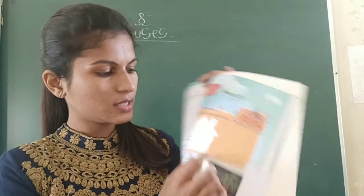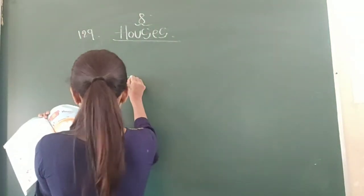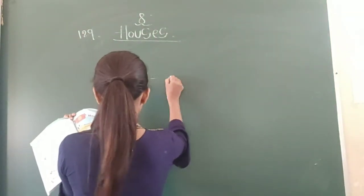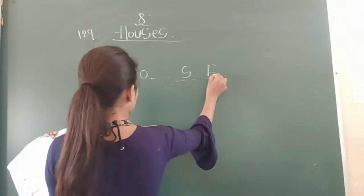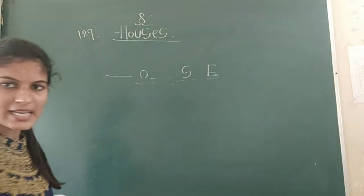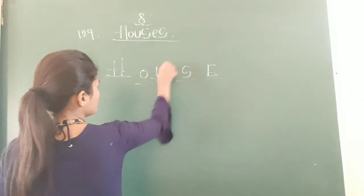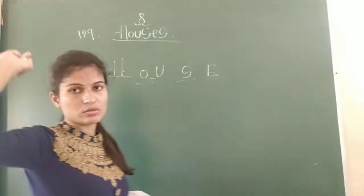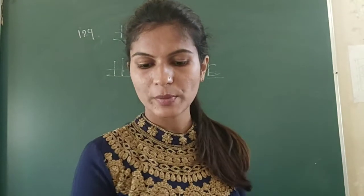After this, down below they have given something - there is a blank, then O, then a blank, and E. You have to complete this. What can it be? Of course, it is H-O-U-S-E, a house. Write it. And join all of those dots to make a home.